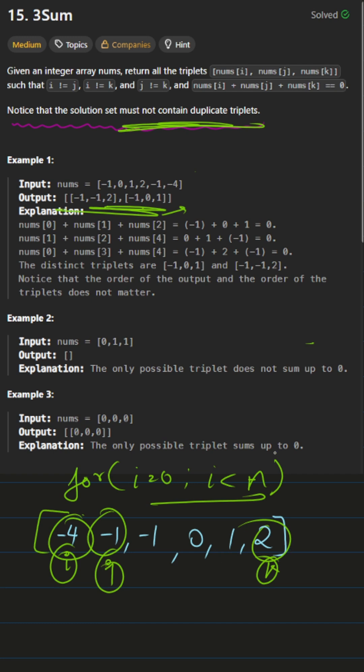If it's equal to zero, great. We put these three elements in the answer directly and continue to move on. If it's not equal to zero and it's less than zero, then we simply do a j plus plus. If it's more than zero, we'll do a k minus minus. Simple two pointer.